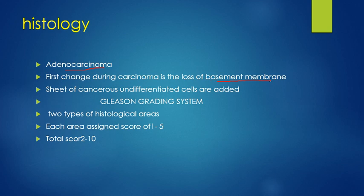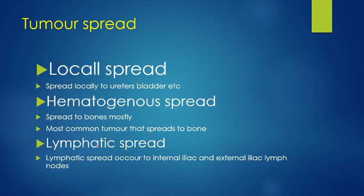The Gleason score and Gleason grading system assigns a score to various areas of the prostate gland. There are two types of histological areas and each area is assigned a score of one to five, so the combined score for the two areas ranges from two to ten.